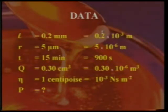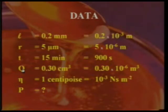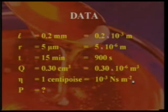These are the data for this problem. The blood-sucking bug sucking blood is similar to the flow of liquid through a capillary tube. L equals 0.2 × 10⁻³ meter, r equals 5 × 10⁻⁶ meter, time is 900 seconds, volume of blood is 0.3 × 10⁻⁶ meter cube, and the coefficient of viscosity of blood is 10⁻³ newton second per meter square.